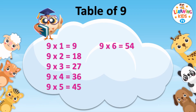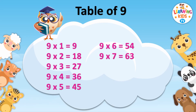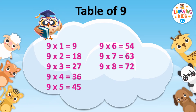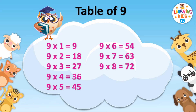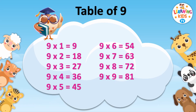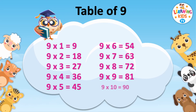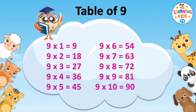Nine sevens are sixty-three. Nine eights are seventy-two. Nine nines are eighty-one. Nine tens are ninety.